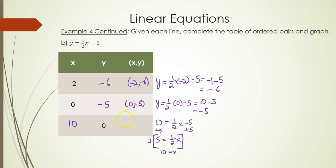So (10, 0) is the ordered pair. Let's plot these points. Hopefully they do form a line because this is a linear equation.